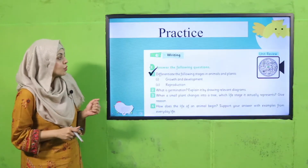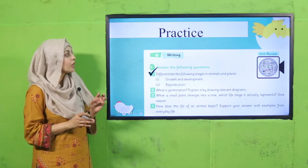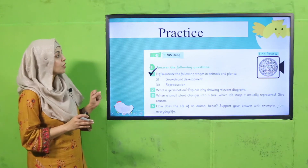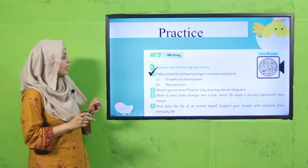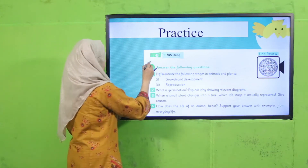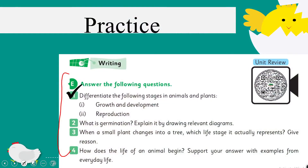Now is the time for practice. You will move towards the writing practice in unit number 11. Question number one — you need your book page and your notebook also. Differentiate the following stages in animals and plants: growth and development, and reproduction.